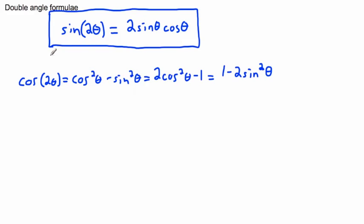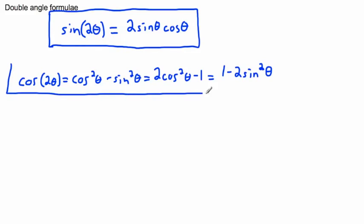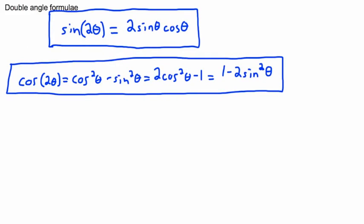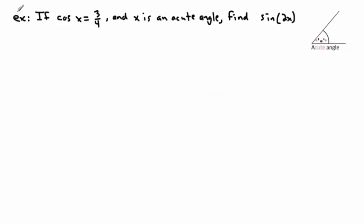These come from mixing things around with Pythagoras. You can take your time and prove these, but for now I'm just going to show you how to use them. For cosine of a double angle, you have three different versions to choose from — whichever one suits you, or whichever terms you're working with.